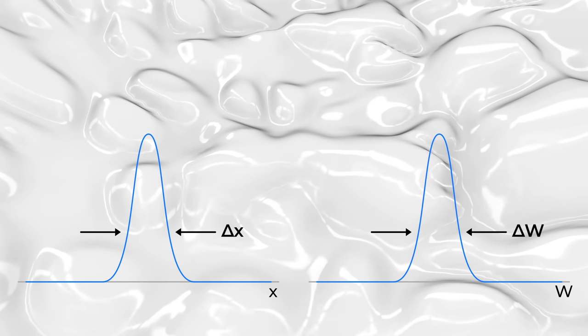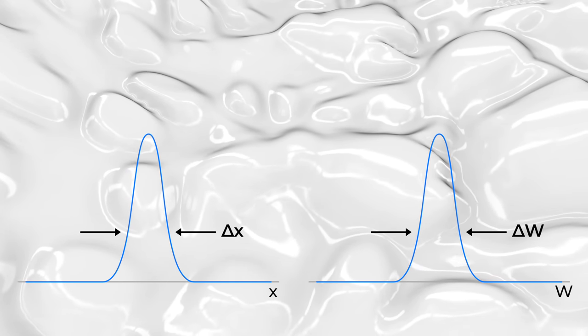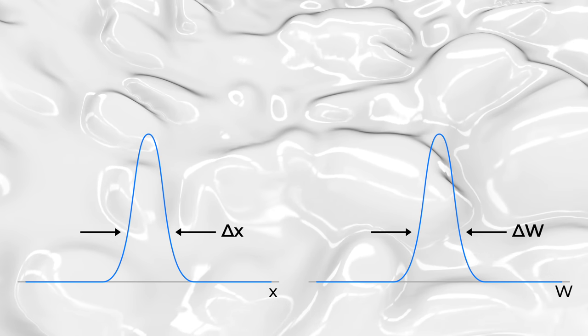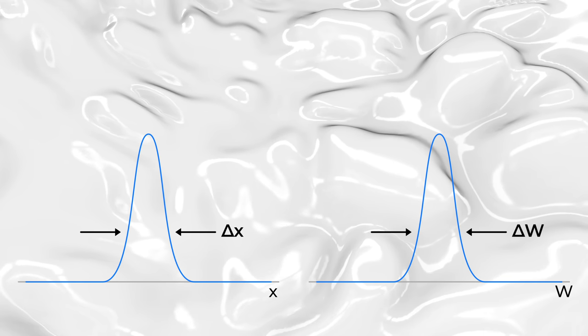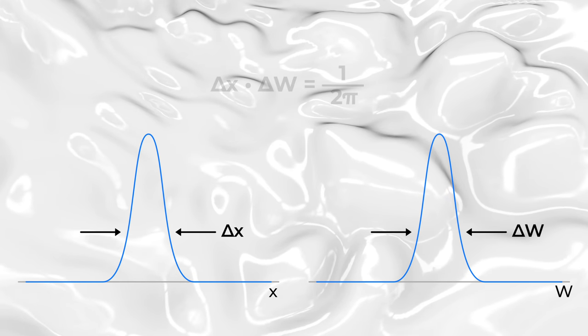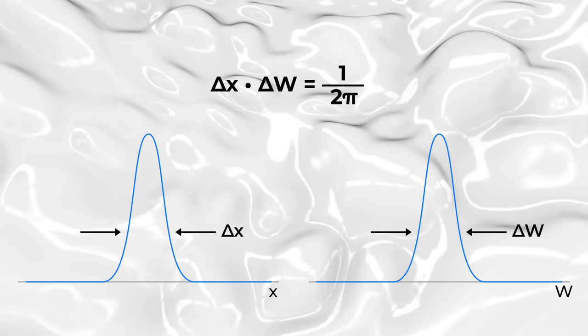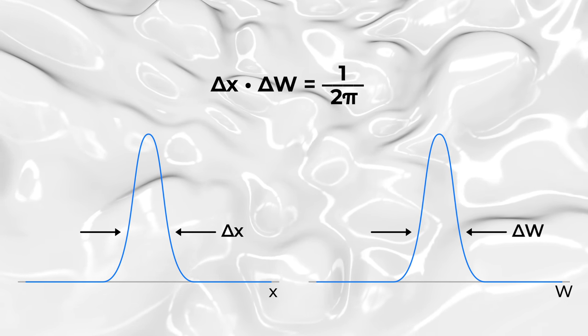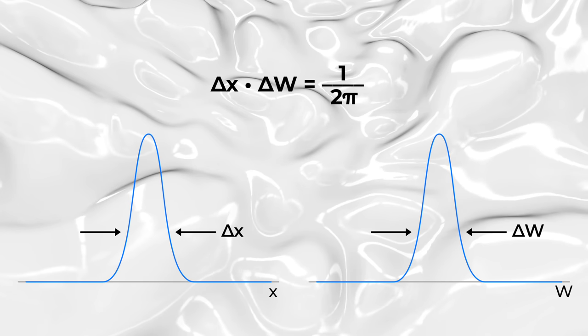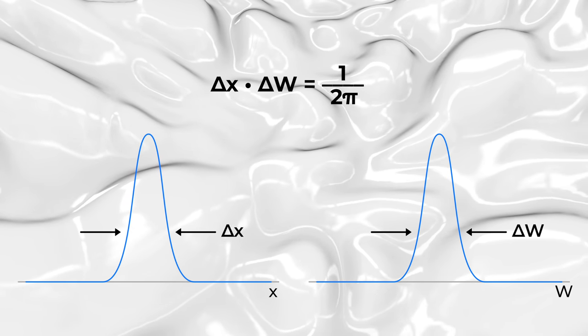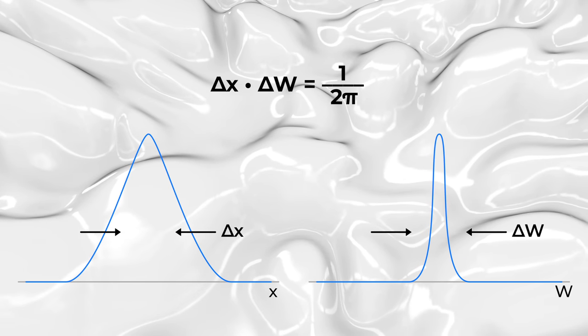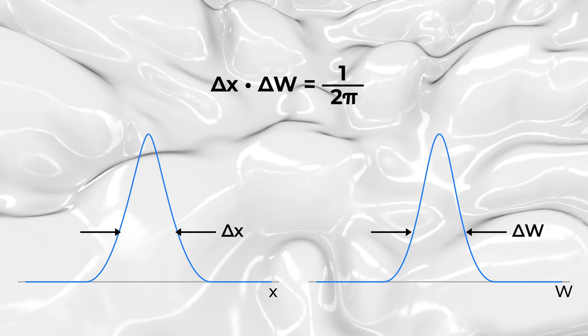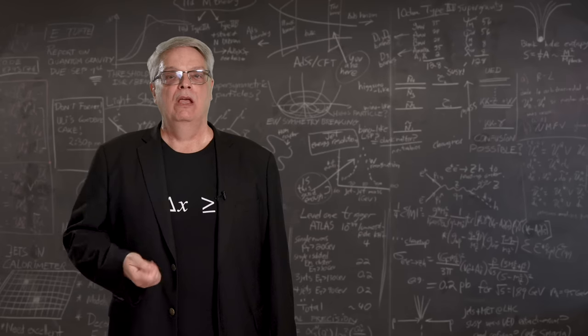Now, here's the most important point. It turns out that the width of the normal distribution in W space is related to the width of the normal distribution position, or x space. So, if you do the math, you find that delta x times delta w is equal to 1 over 2 times pi. So what does that mean? It means that if delta x gets small, then delta w gets big and vice versa. They can't both be small at the same time.